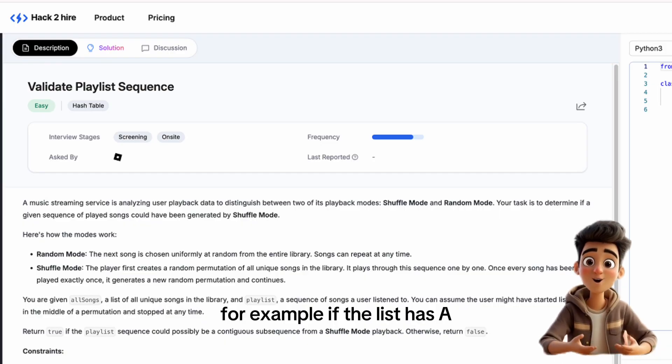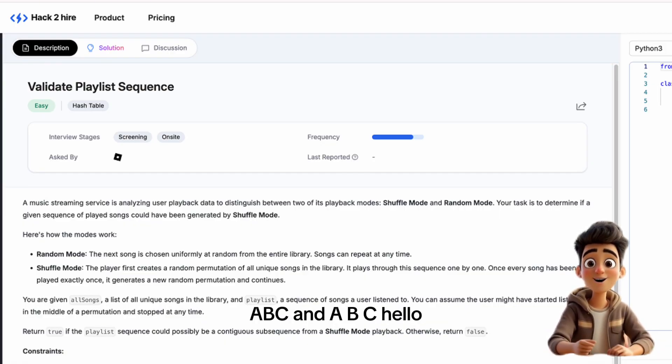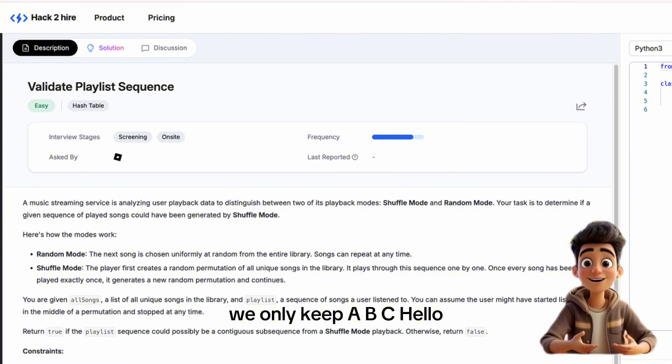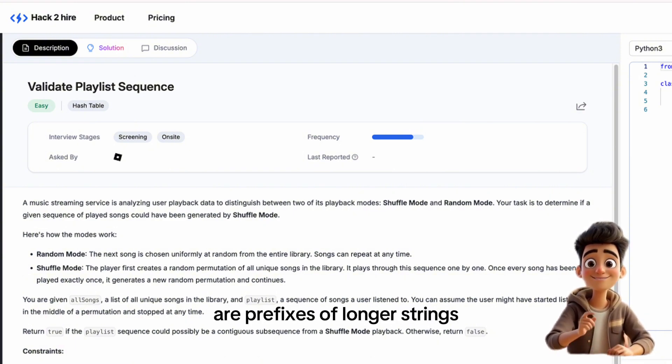For example, if the list has a, abc, and abc hello, we only keep abc hello. Why? Because both a and abc are prefixes of longer strings.